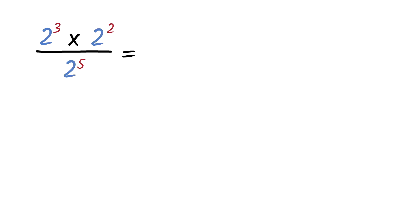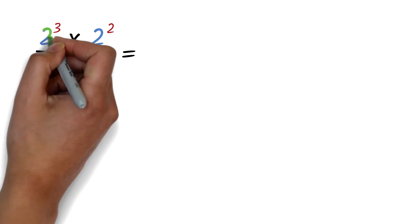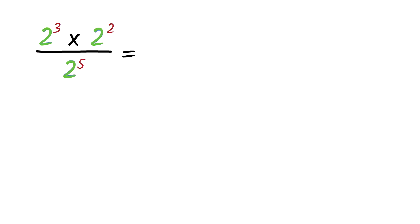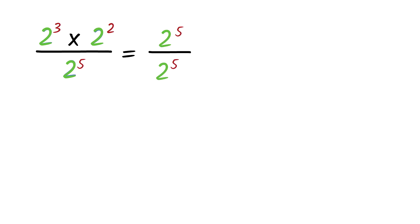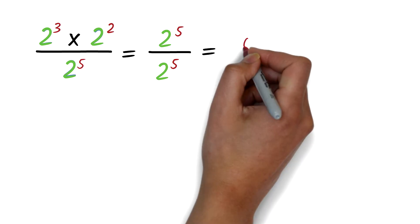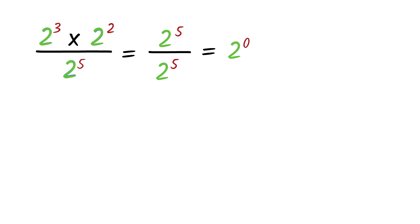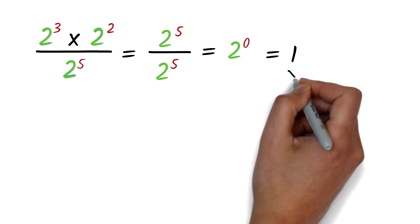Let's put everything together. Simplify 2 exponent 3 times 2 exponent 2 divided by 2 exponent 5. They all have the same base of 2, so we use the simplified methods. First, the multiplication: add exponents 3 plus 2 to get exponent 5, giving 2 exponent 5. Next, the division: subtract exponents 5 minus 5 to get exponent 0, giving 2 exponent 0. We learned that any number exponent 0 is 1, so 2 exponent 0 equals 1. This is our final answer.